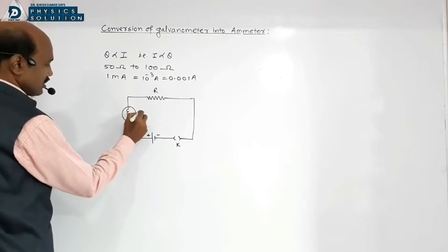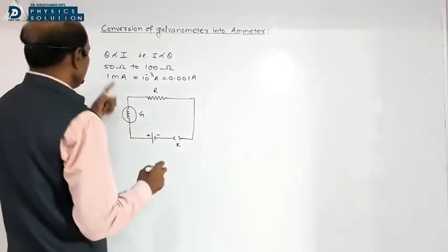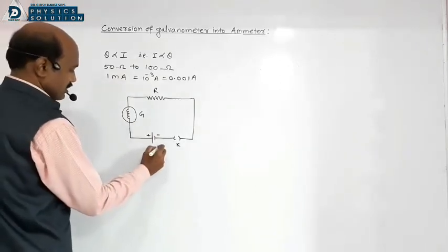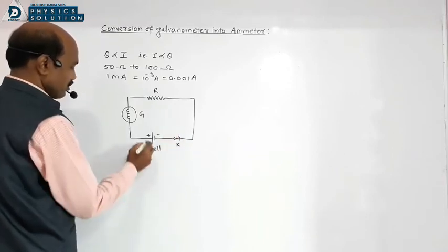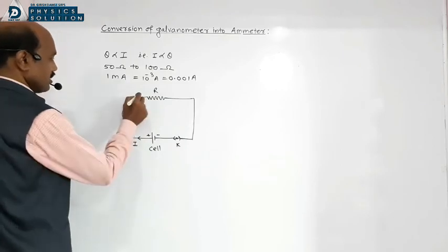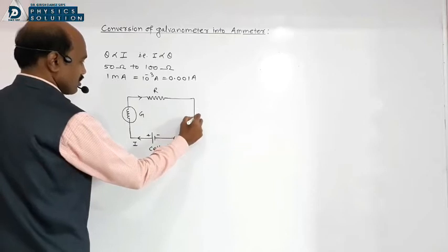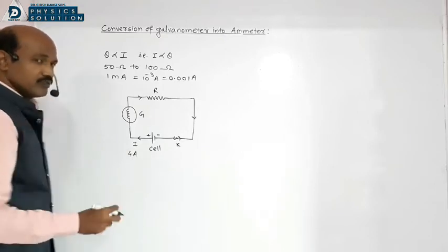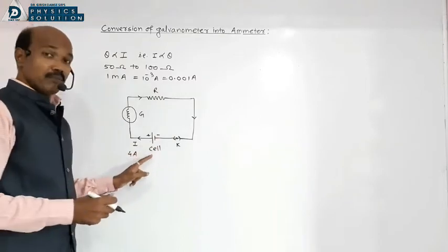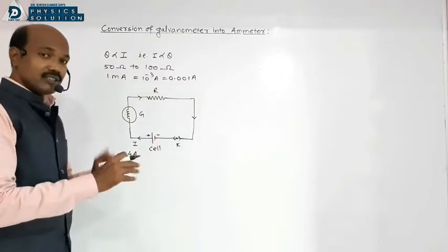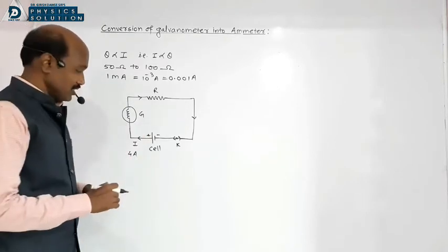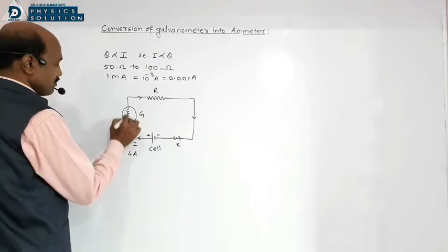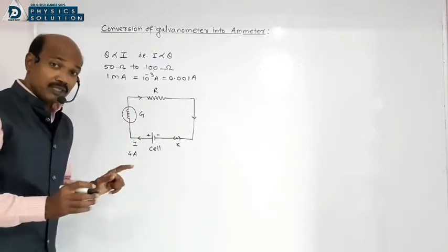This is the galvanometer coil, whose resistance is capital G, ranging 50 ohm to 100 ohm. When the plug key is closed, current I flows through the circuit, through the galvanometer as well as through resistance. For example, if the current value is 4 ampere, and 4 ampere current passes through the galvanometer coil, it will definitely damage the coil because the current carrying capacity is only 1 milliampere.